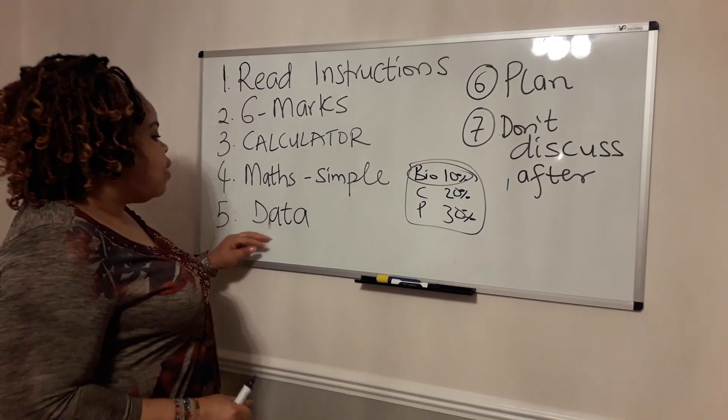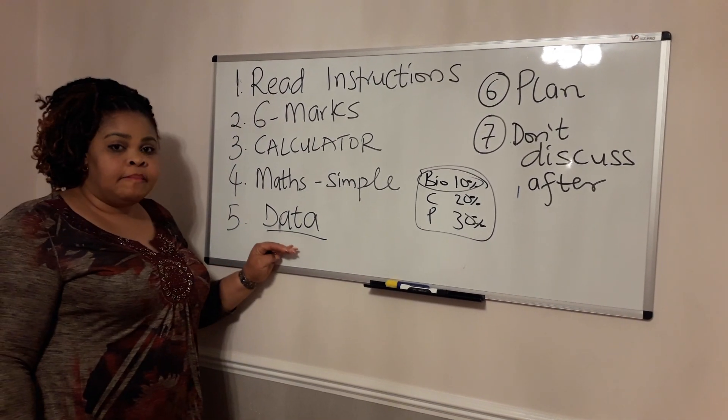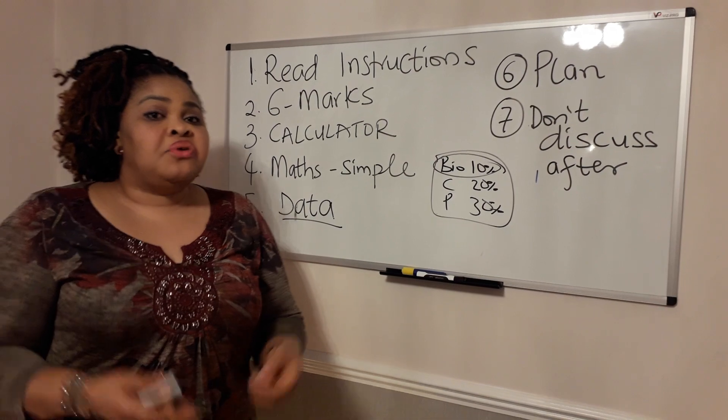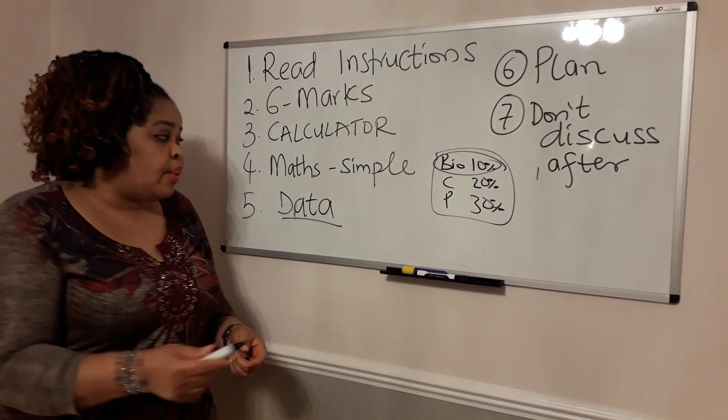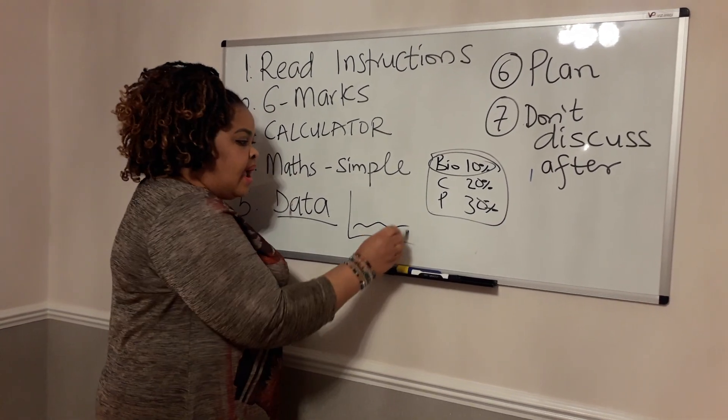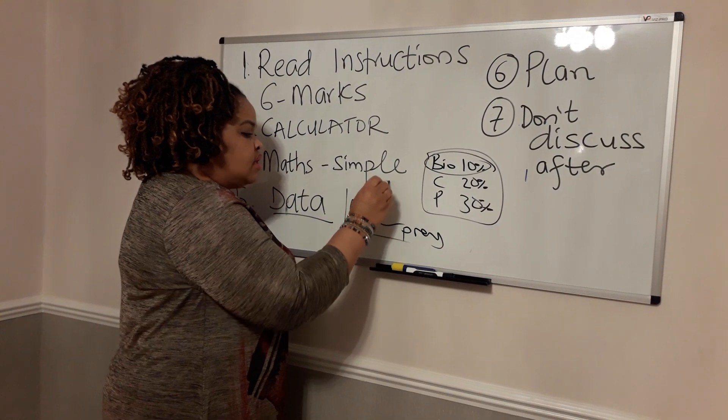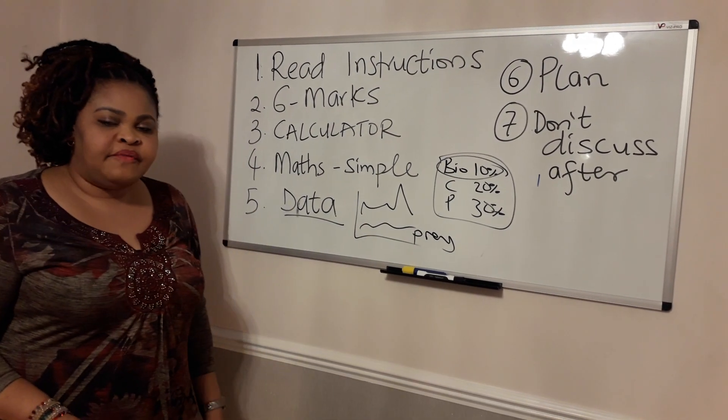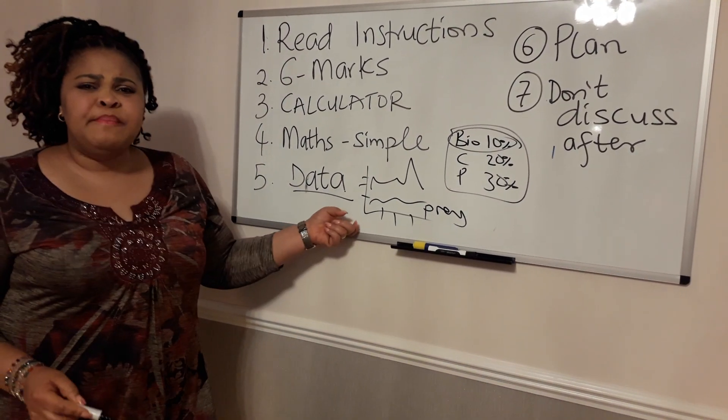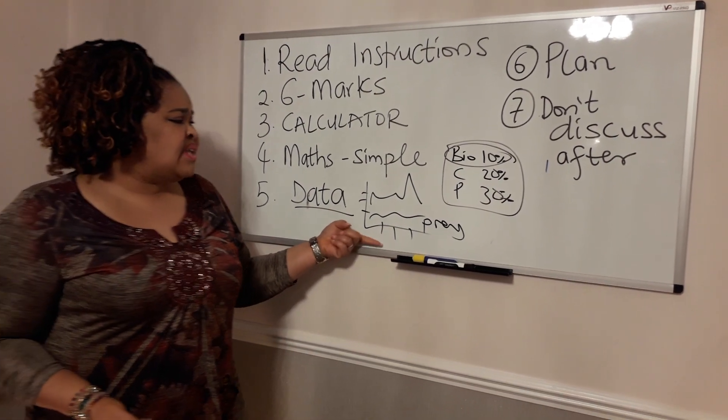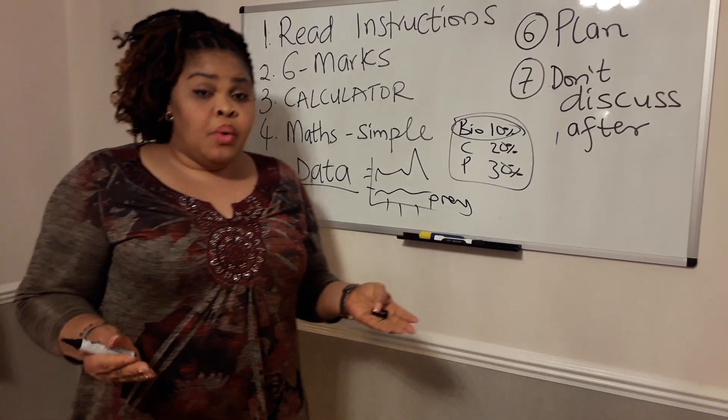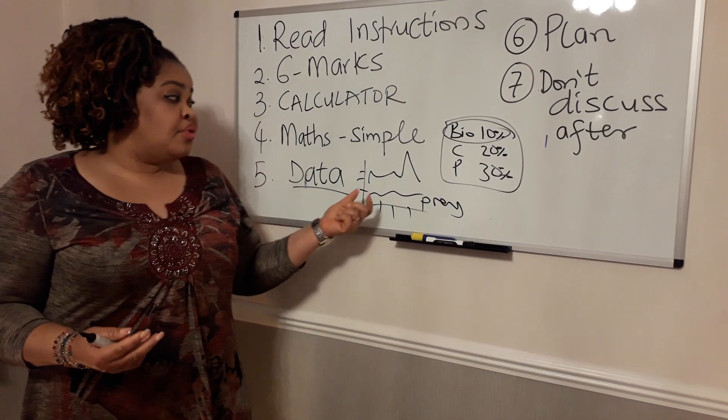And then the fifth one is data. I have written here data. Data questions are so easy to answer. A very simple example: they could give you a graph showing you how, for instance, the number of a prey have increased. They've named the prey, and in accordance with how the predator community have also changed. They'll put years or something like that, put numbers, very simple drawings like that, very simple data information, or it could be a full graph with bars and all of that. In whatever way they ask the data question, the answers are on the question.